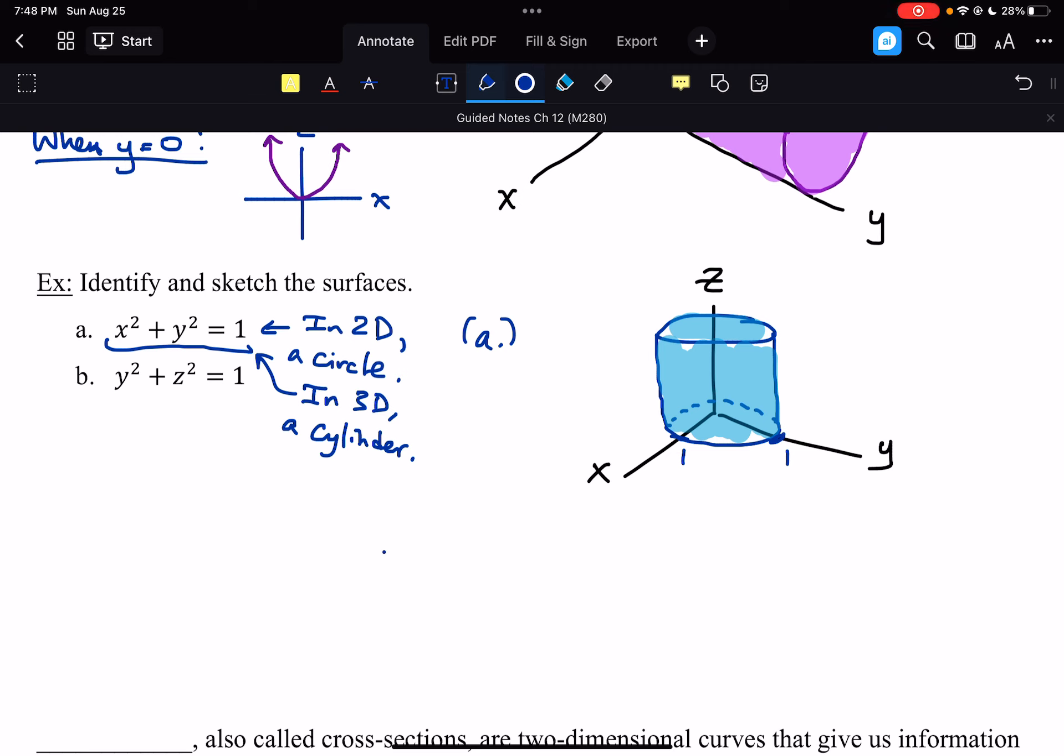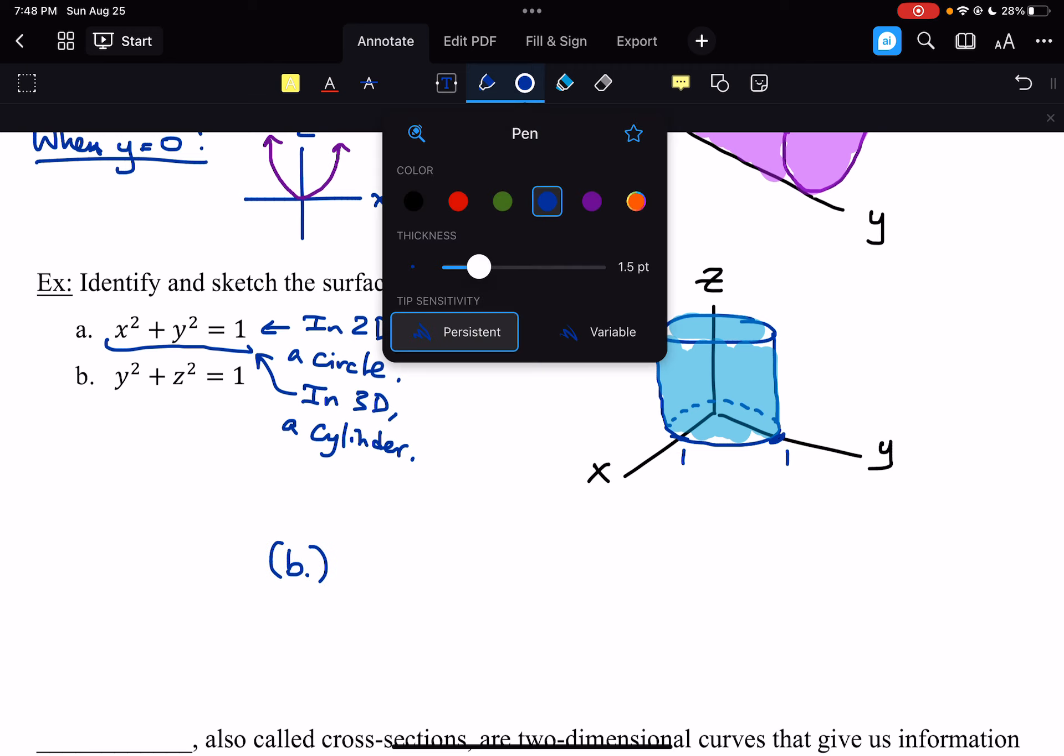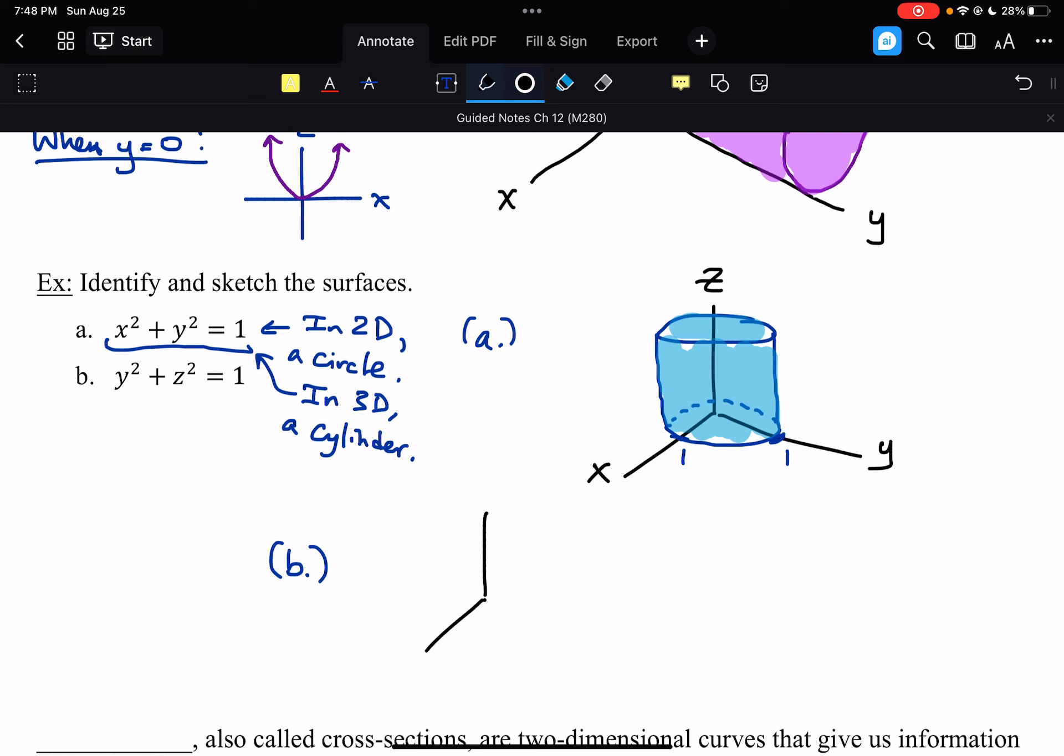Now, if we look at part B. Notice the relationship here is the same, but not with x and y, but rather with y and z. So we're not looking x squared plus y squared equals 1. We're y squared plus z squared equals 1. So this one is also a cylinder.